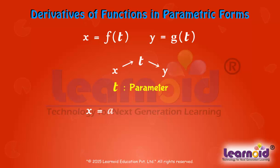Let x equal at squared and y equal 2at. x and y are related through t. x and y are said to be in parametric form with t as a parameter.